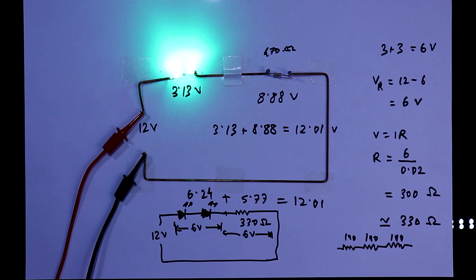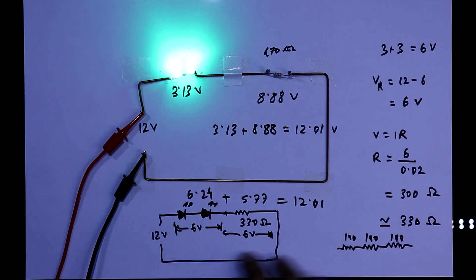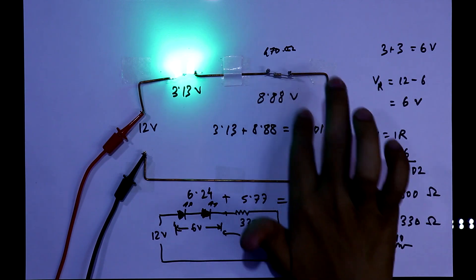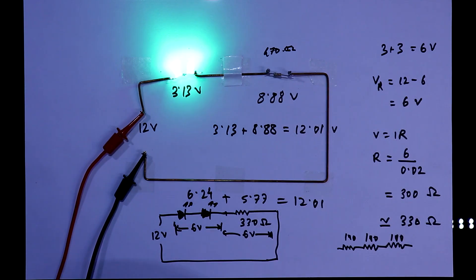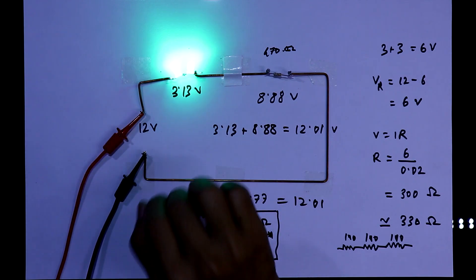Now if you want to light these LEDs in different voltage, in the same way we have to calculate all this. And before calculating the resistor, you have to know two things about your load: the voltage and the current.